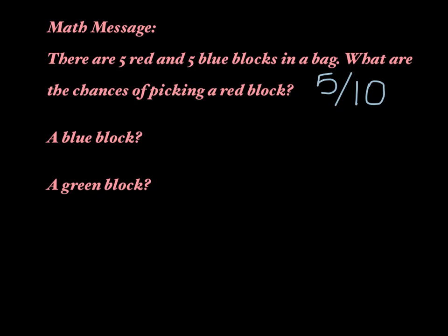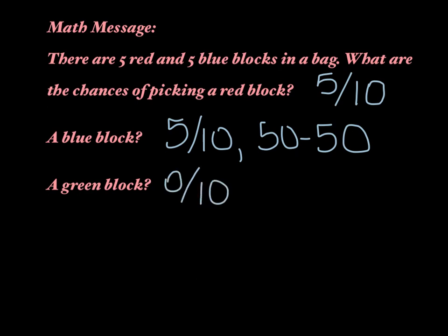What about a blue block? Same thing, right? We have five blue blocks, so again, it would be five tenths, or a 50-50 chance. What about a green block? That would be zero out of ten, or impossible.